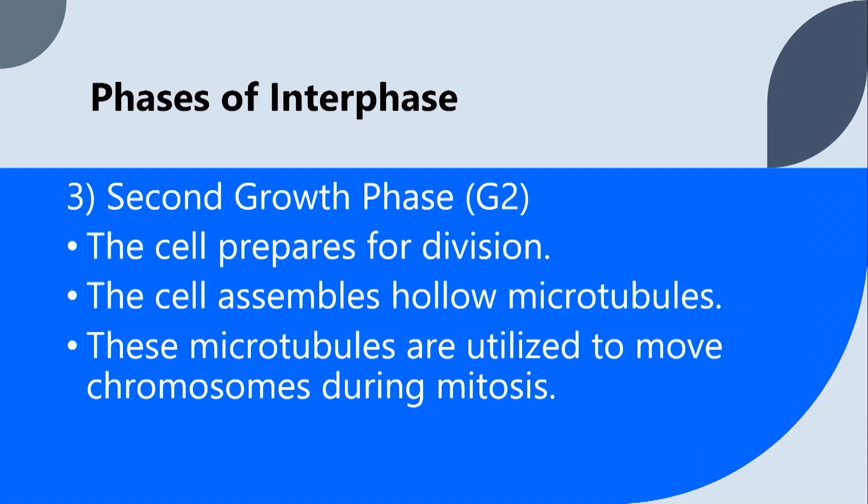But once we've made that copy of DNA, we'll move into the last part of interphase. This is called G2. What's happening here is the cell is preparing to divide. It's going to assemble some structures we need to divide, such as these hollow microtubules. And then lastly, these microtubules are utilized to move chromosomes during mitosis.